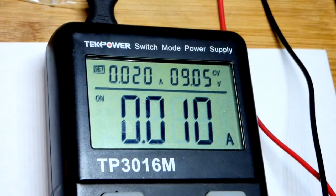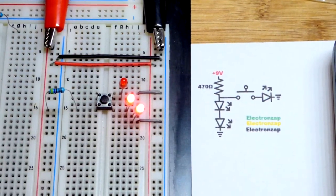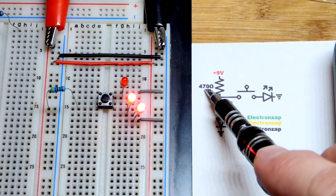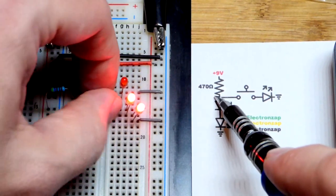So I'm using 9 volts right there. You can see power supply set to 9 volts and I'm using a 470 ohm resistor because that's really about the minimum resistance.